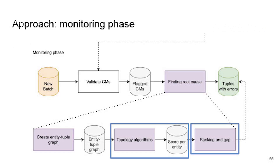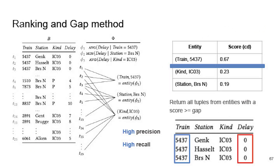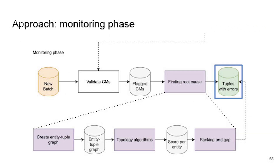Now that we have scores, we determine which tuples to return. We rank all entities from biggest to smallest score and find the biggest consecutive gap between two adjacent entities — denoted by the blue line. We then return all tuples from entities above this gap. In this case, that perfectly identifies the error: we found the train with the broken clock, didn't add any extra rows, so we have very high precision, and we found all rows with the problem, giving very high recall as well.